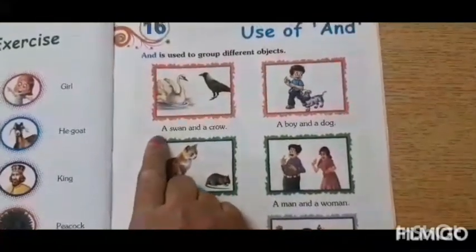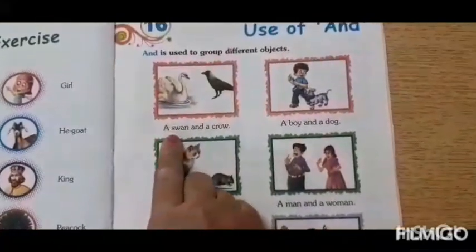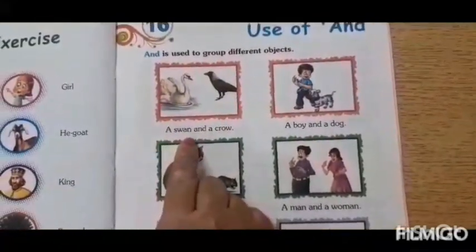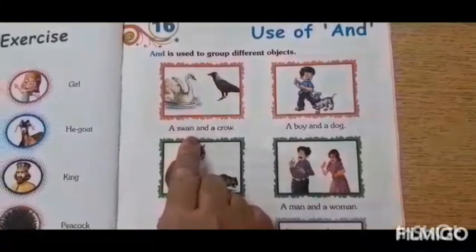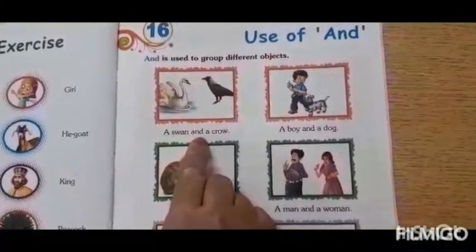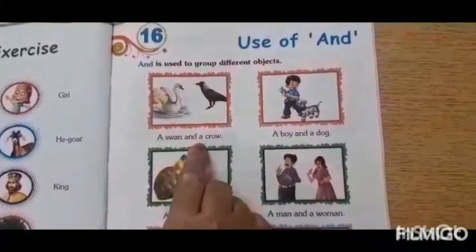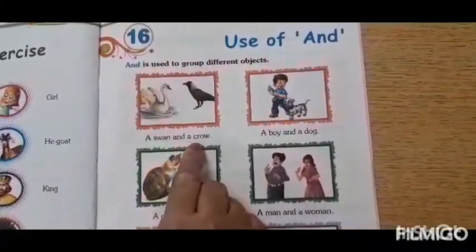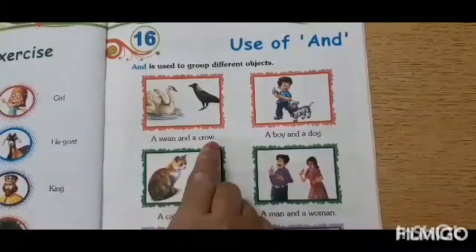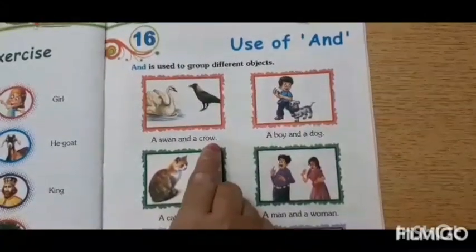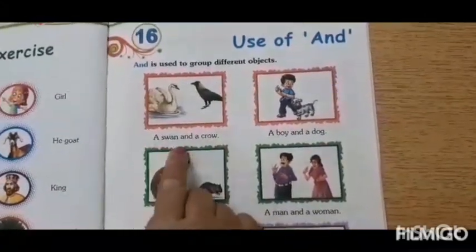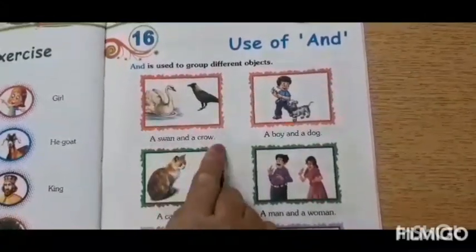A-S-W-A-N — swan. A-N-D — and. A-C-R-O-W — crow. A swan and a crow.